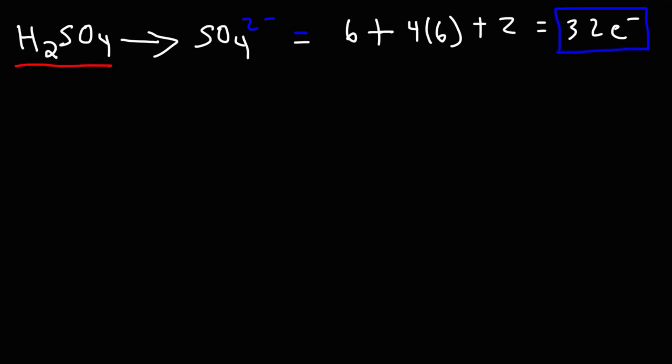Because 32 is a multiple of 8, this tells us that there's not going to be any lone pairs on the central sulfur atom.